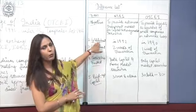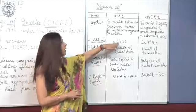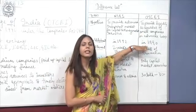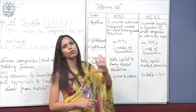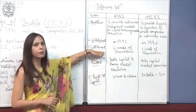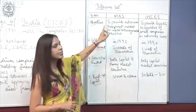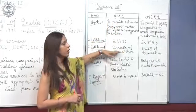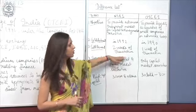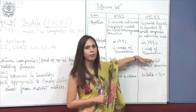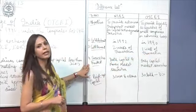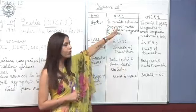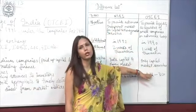The second difference is establishment: NSEI was established in 1992, whereas OTCI was established in 1990 but started trading in 1992. Third is the settlement period: payment and delivery in NSEI is done within two weeks of the transaction, whereas in OTCI the time period is one week. Regarding securities traded, both capital and money market securities are traded at NSEI, whereas at OTCI only capital market securities are traded.